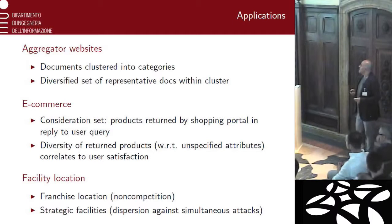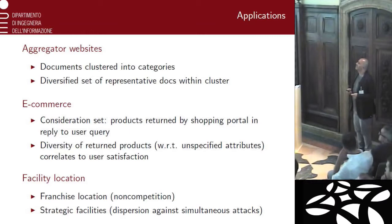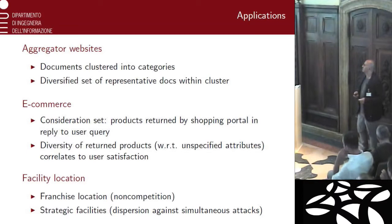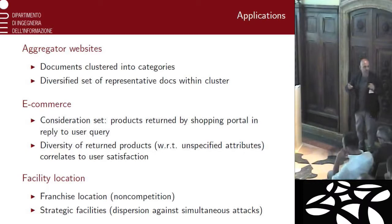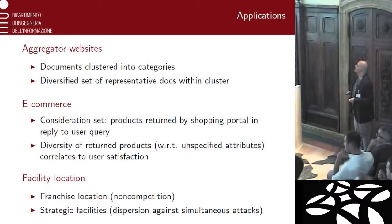There are many applications of this general optimization framework. One use of diversity maximization is in aggregator websites. Basically, you have documents clustered into categories — think about Google News, for instance — and in each category, you want to offer snippets to the user of a diversified set of representative documents. You want the documents within each category to be basically diverse in order to interest the user. You don't want to give the user the same news over and over.